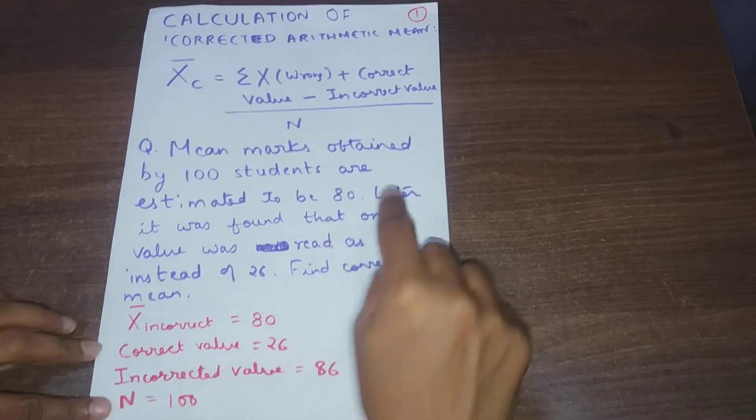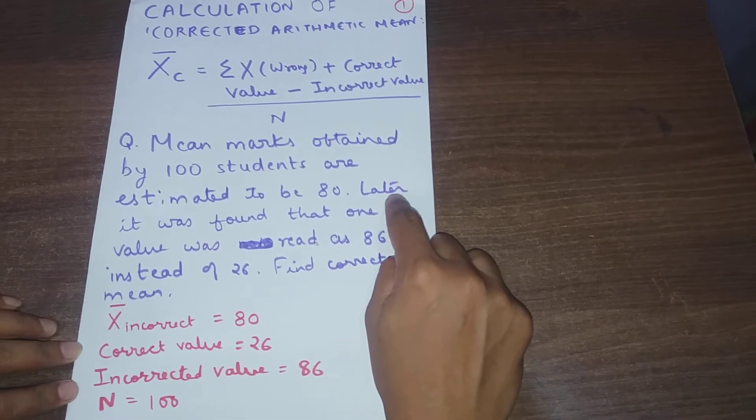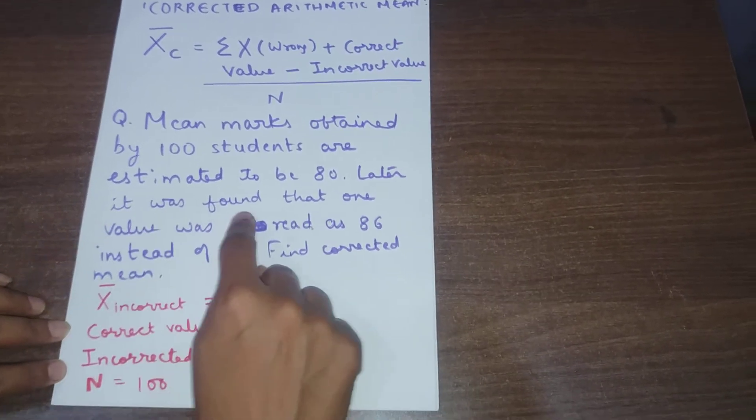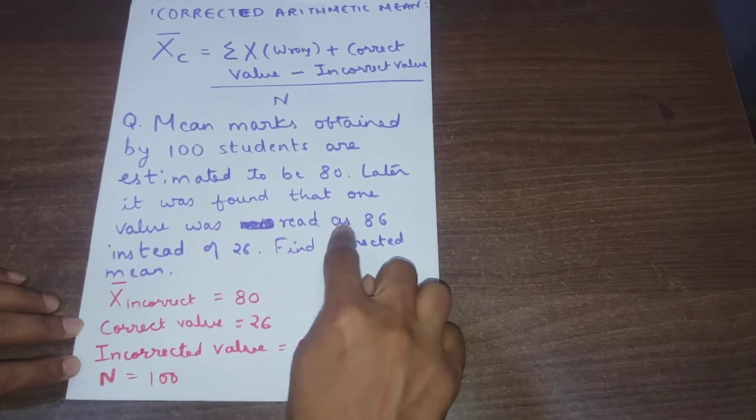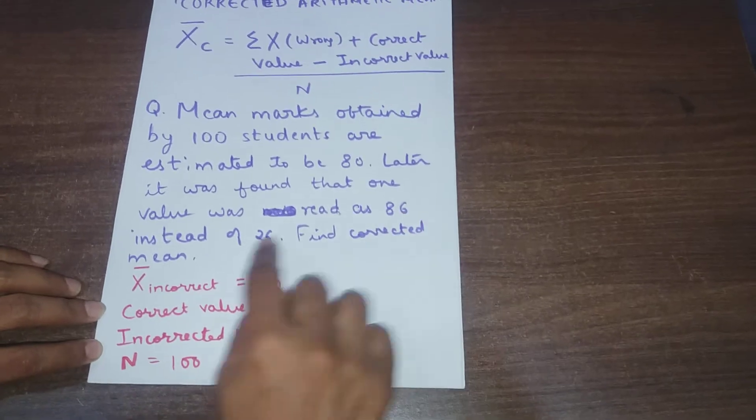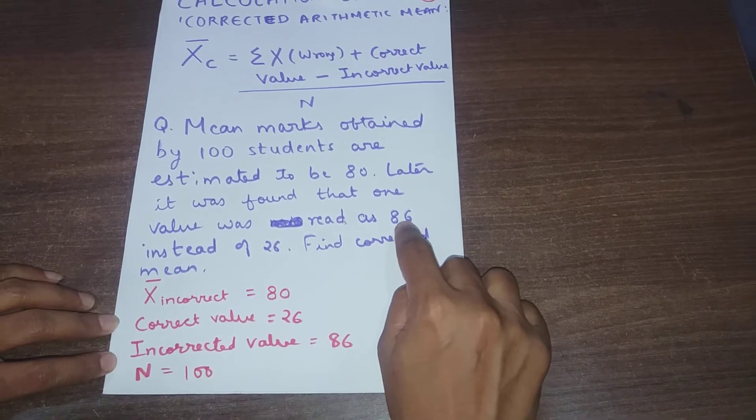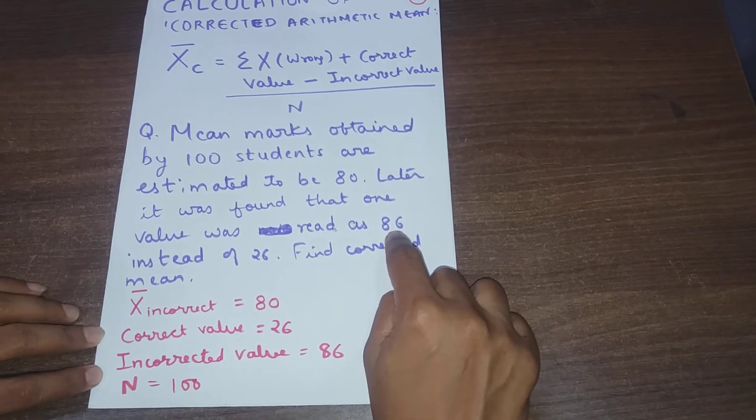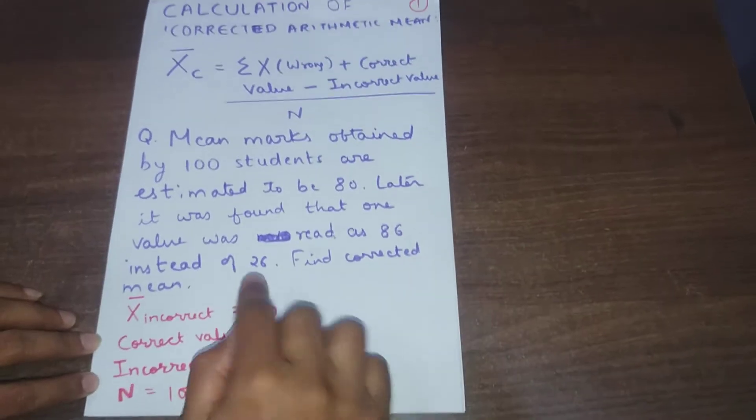Why it is incorrect? See the second part of the question. Later it was found that one value was read as 86 instead of 26. Means instead of 26, someone misread 86 and wrongly written 86 in place of 26.